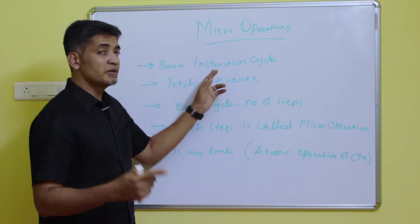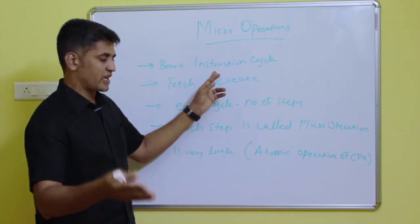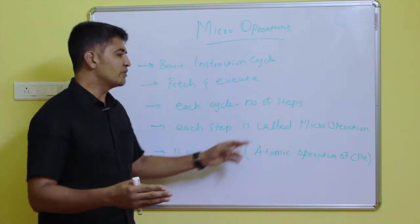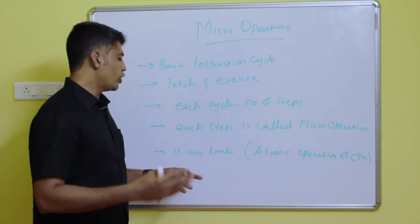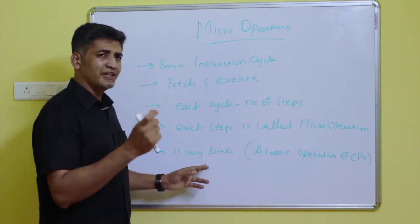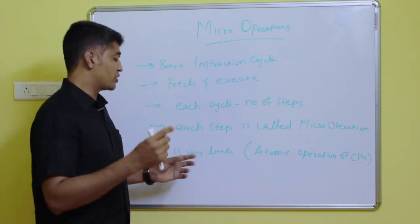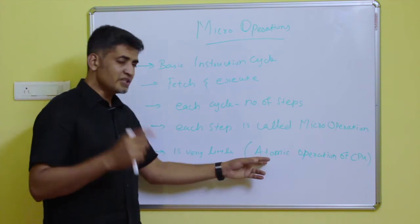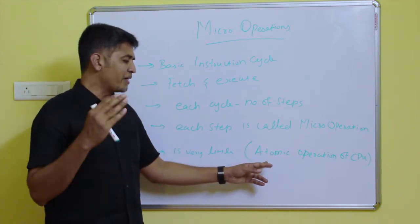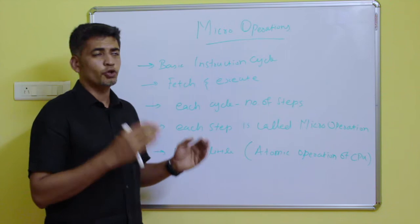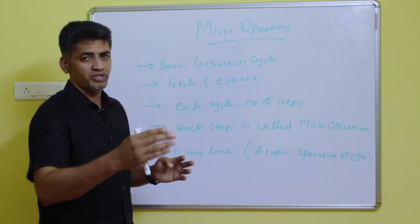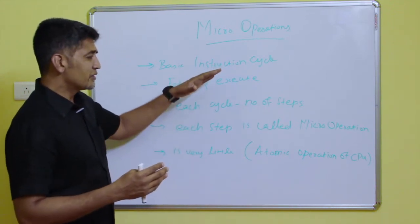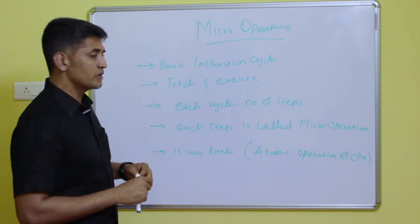These steps are called micro operations. If you consider the whole instruction execution, micro operations are very little — they are the smallest unit. These micro operations are called atomic operations of the CPU. So now we have seen what a micro operation is.